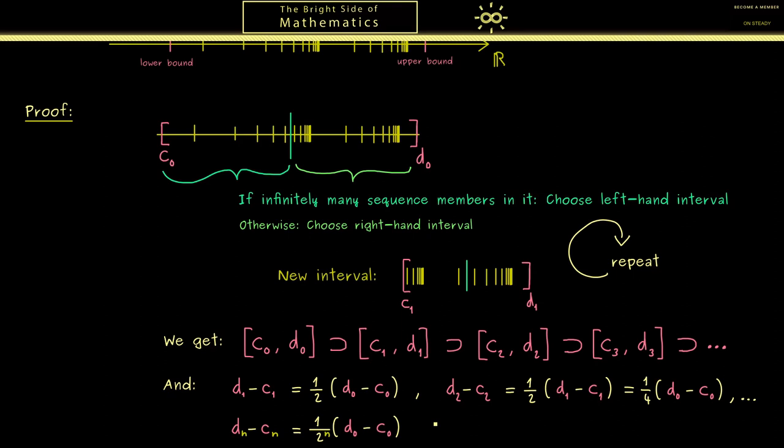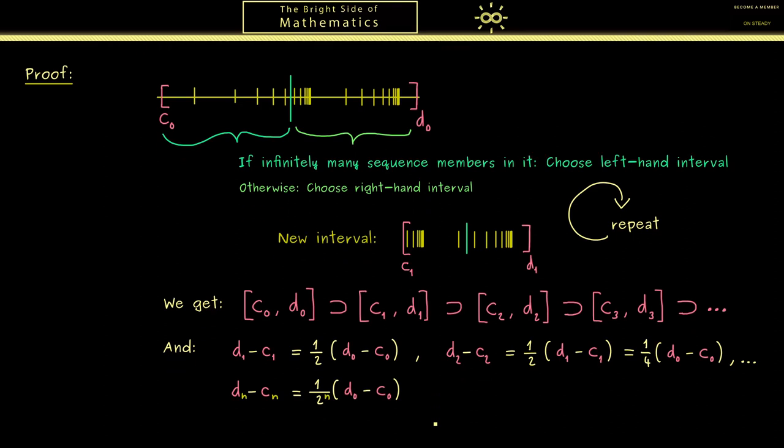We simply get one half to the power n times the length of the original interval. And there you immediately see this is a nice sequence that converges to zero.